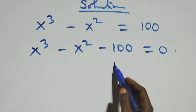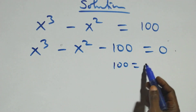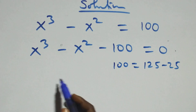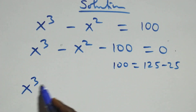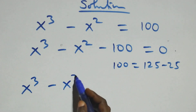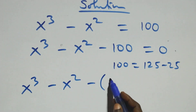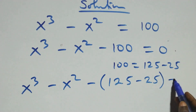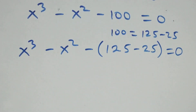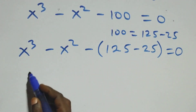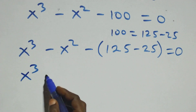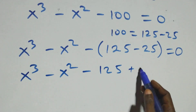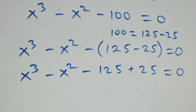We can express 100 as 125 minus 25. So this equation becomes x cube minus x square minus (125 minus 25) equals to 0. Then opening the bracket, this becomes x cube minus x square minus 125 plus 25 equals to 0.